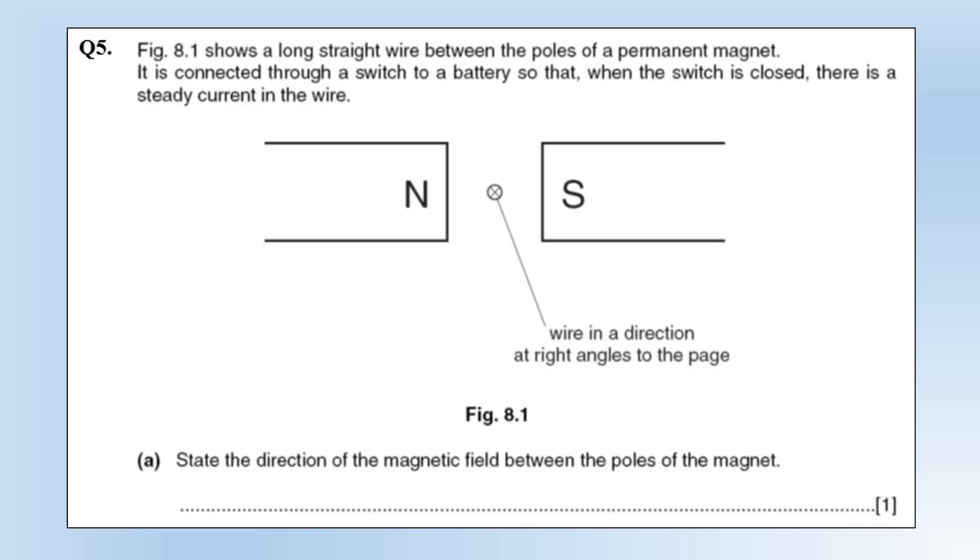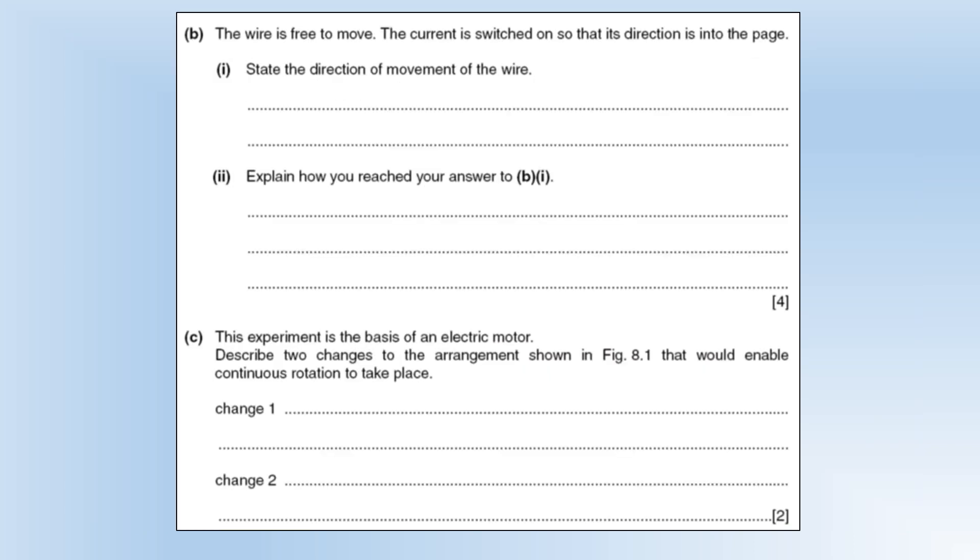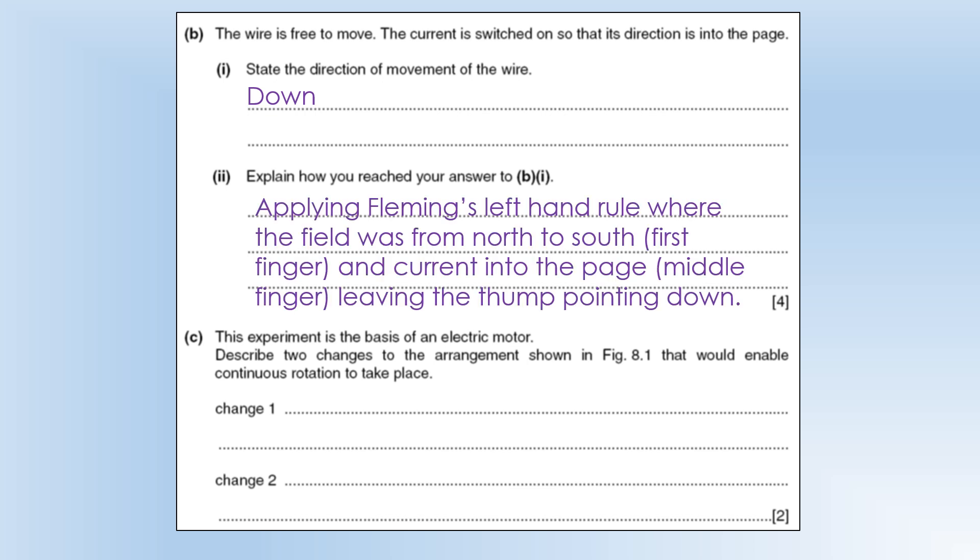The diagram shows a long straight wire between the poles of a permanent magnet. It is connected through a switch to a battery so that when the switch is closed there is a steady current in the wire. State the direction of the magnetic field between the poles of the magnet. Well they go from north to south. The wire is free to move. The current is switched on in this direction into the page. State the direction of movement of the wire. So it's going to be down. And we're using Fleming's left hand rule for this. So the field goes from north to south. That tells you your first finger direction. The current is going into the page. That tells you your middle finger direction. So you should see that your thumb is now pointing down. Which is how we got the answer.